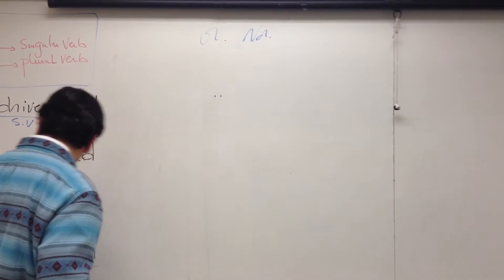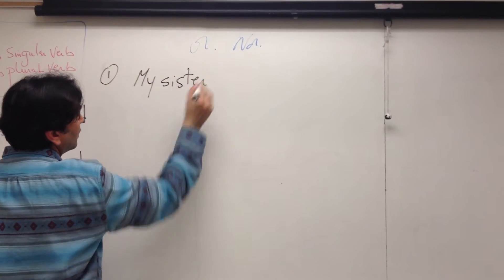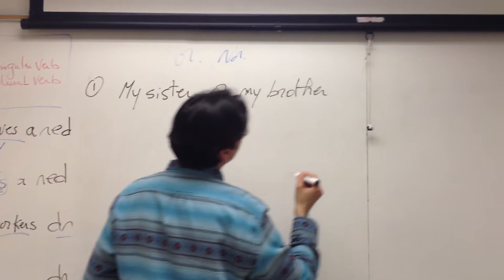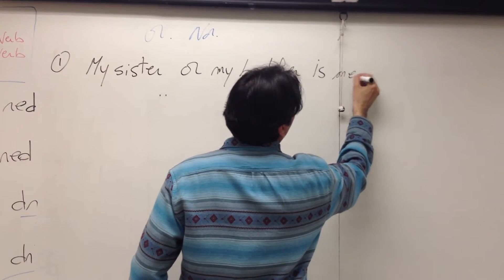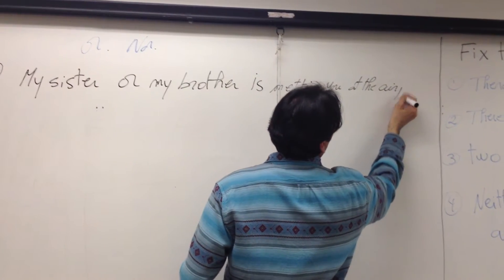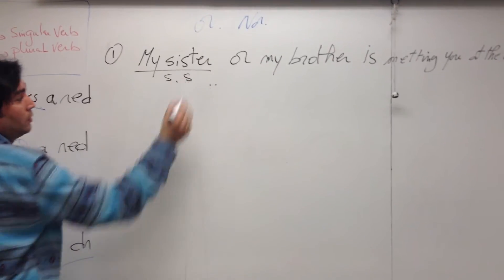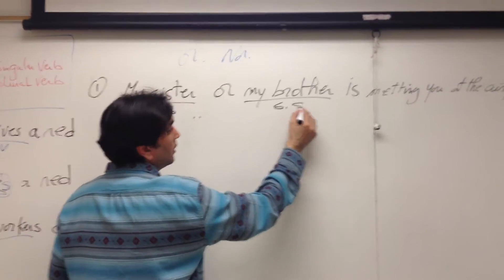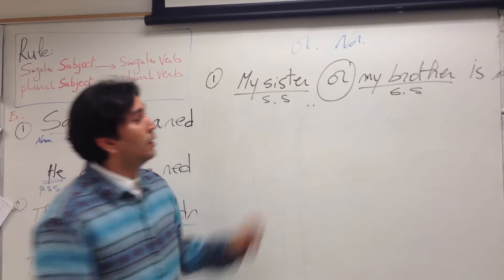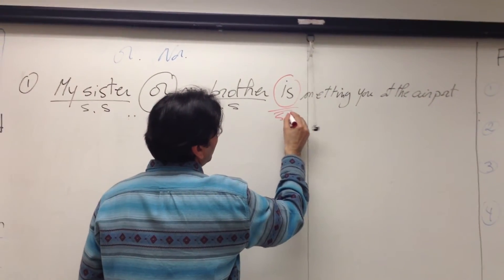And the example is: my sister or my brother is meeting you at the airport. Let's find the subject here. Yes, my sister, subject number one, singular. My brother, also is another subject in this sentence. Subject, singular also, joined by or. And we said when it's joined by or, two singular subjects joined by or, the verb has to be in the singular form. That's why we have is, not are. Is, singular verb. Okay?